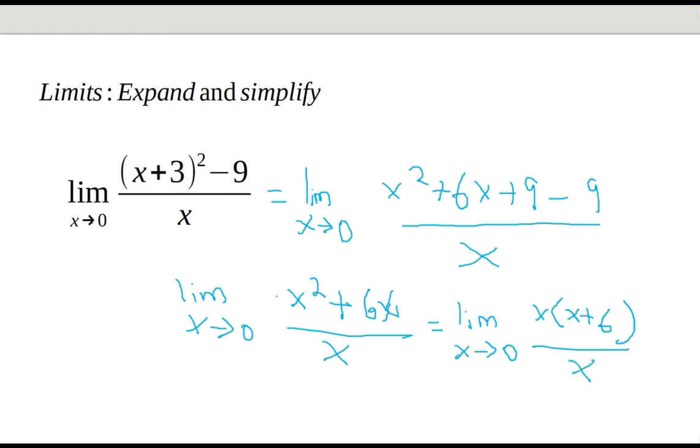Now we see, yay, we can cancel these out and we are left with the limit of x approaching zero: x plus 6. When x is zero we end up with 6. So this is the solution.